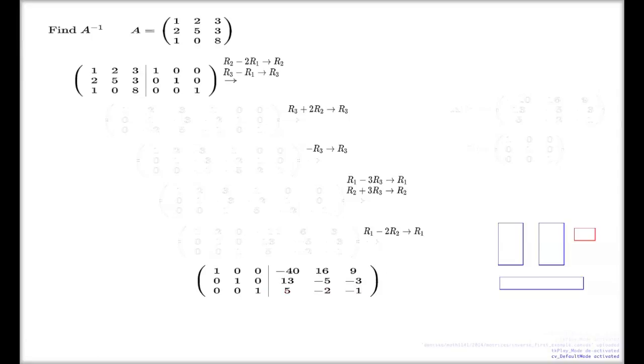This is the reduced row echelon form. It perfectly fits the definition. But given that we have three pivots on the left-hand side, it is the identity matrix. So our previous discussion guarantees that this right-hand side is the inverse we are looking for. I just copy this inverse here.